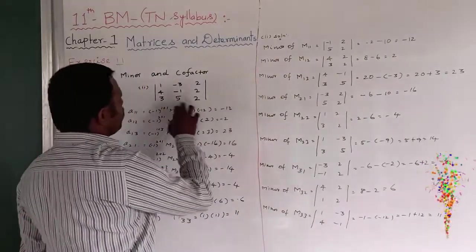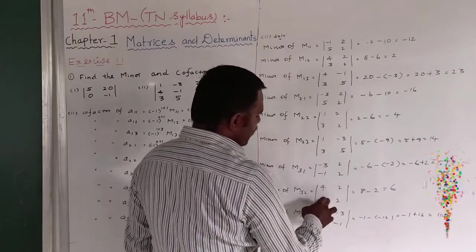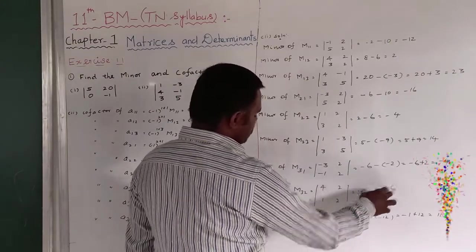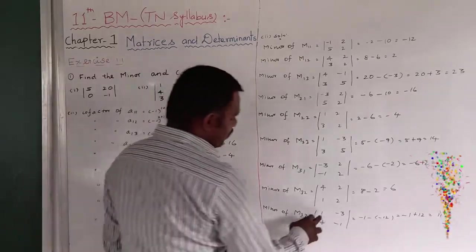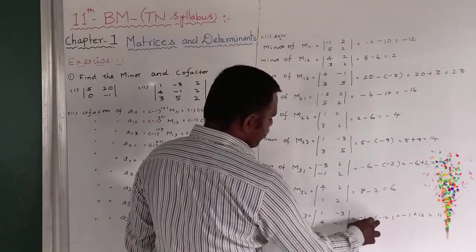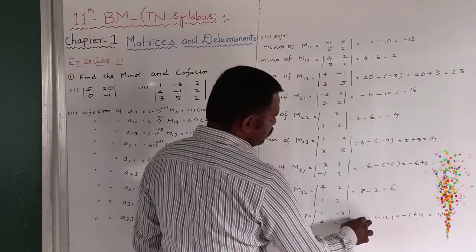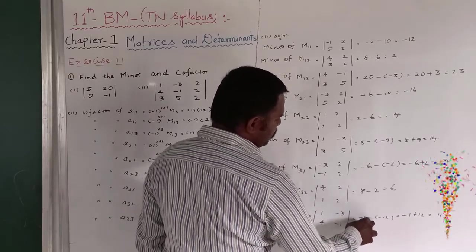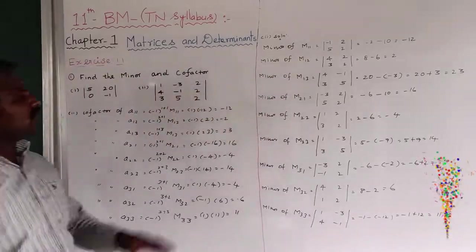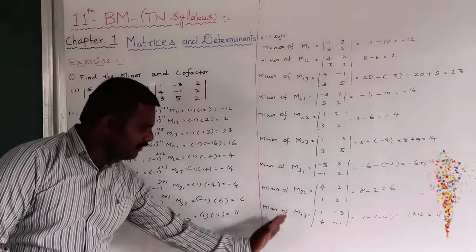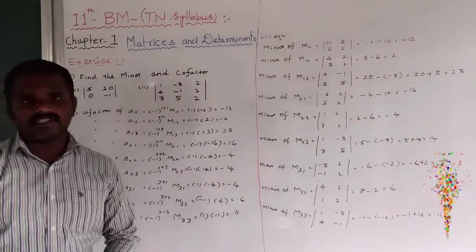M32 means third row second column: 1, 2, 4, 2. So 4 twos are 8, minus 2, equals 6. M33 means third row third column: 1, minus 3, 4, minus 1. Minus 1 minus of minus 3, so 4 threes are minus 12. We already have a minus, so minus and minus gives plus 12. Then 12 minus 1 equals 11. So this is the minor. First we have to find out the minor, then we find out the cofactor of that determinant.